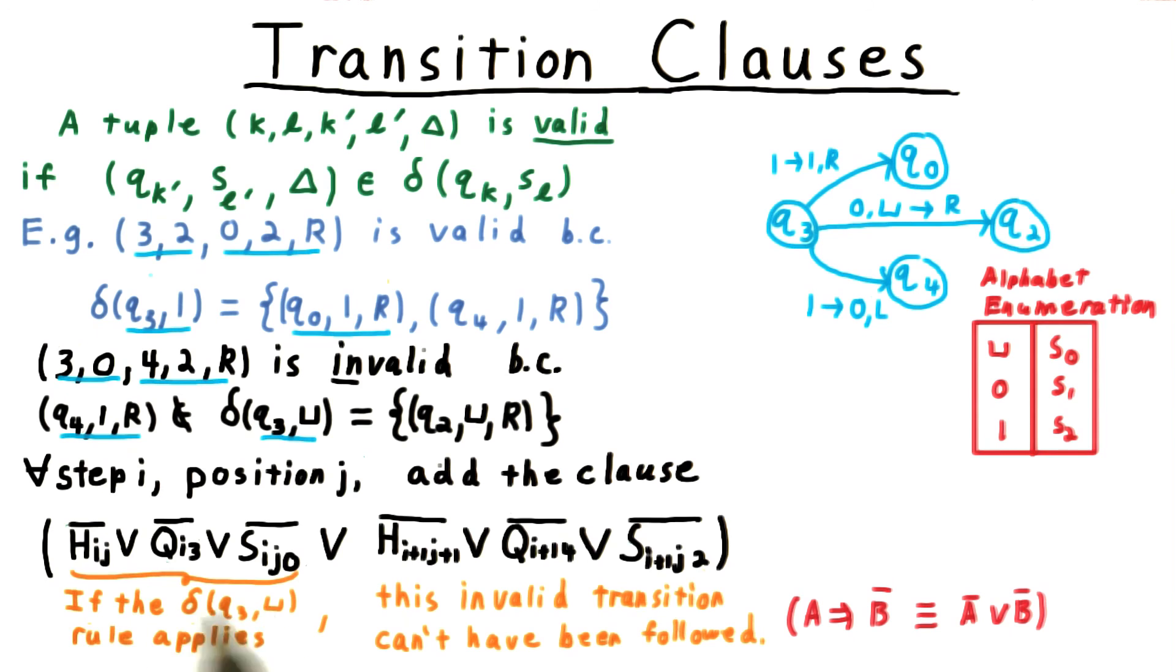That's the logic we're using here. A being, does the transition rule apply? And B being, was the invalid transition followed?